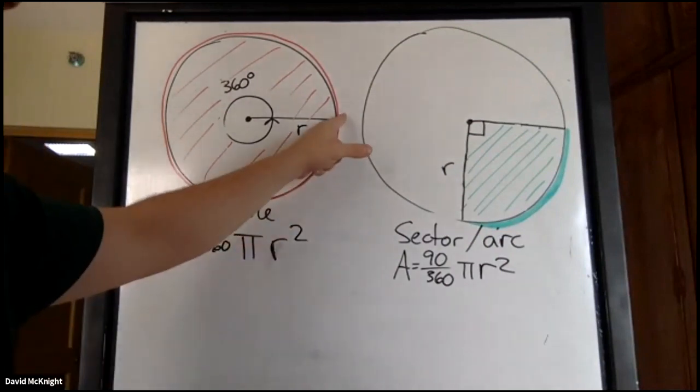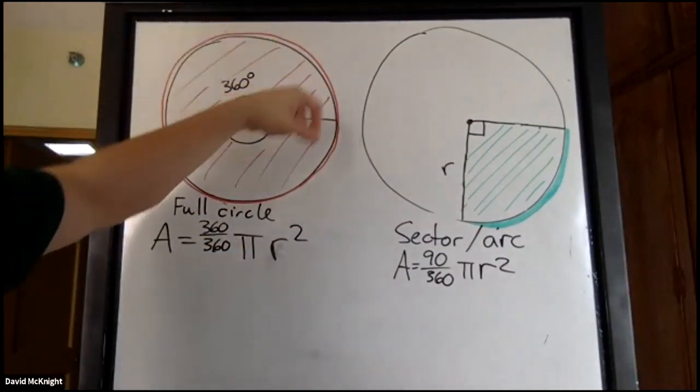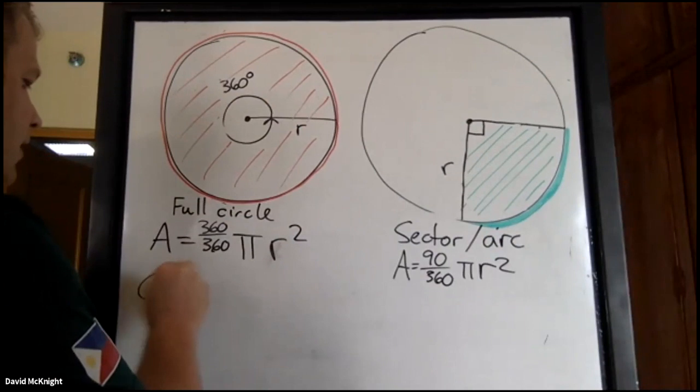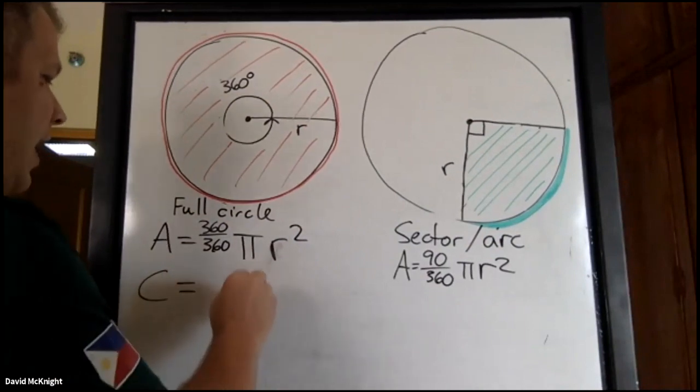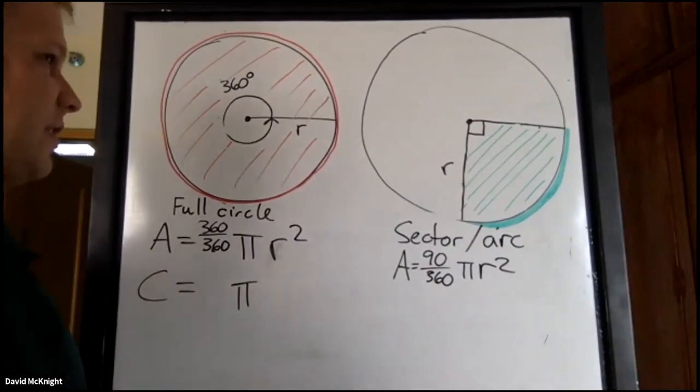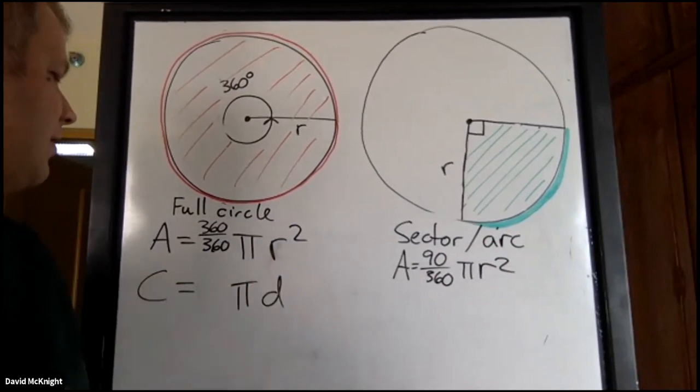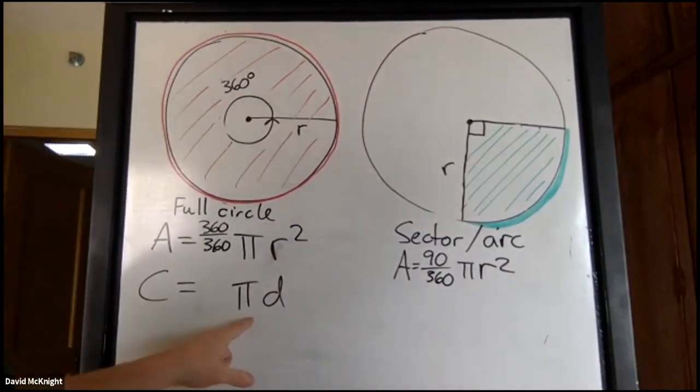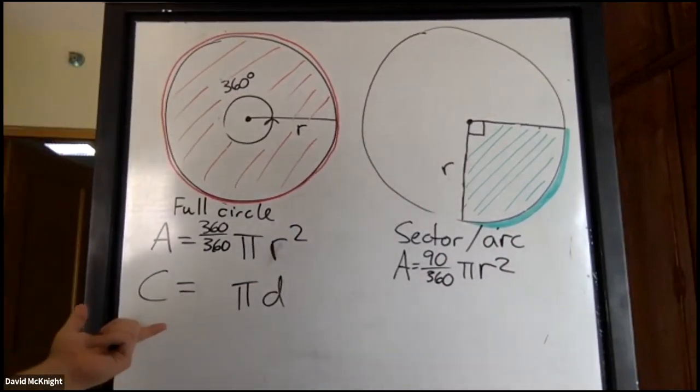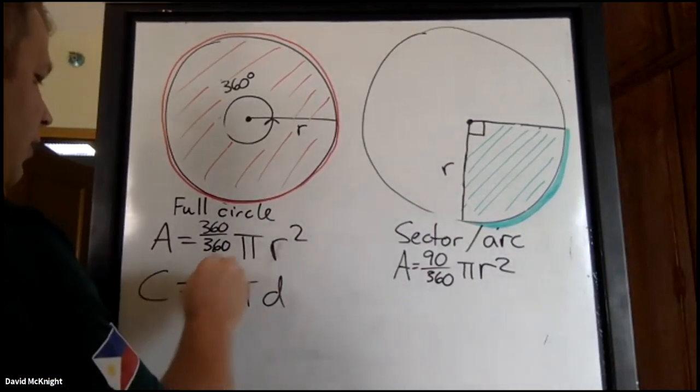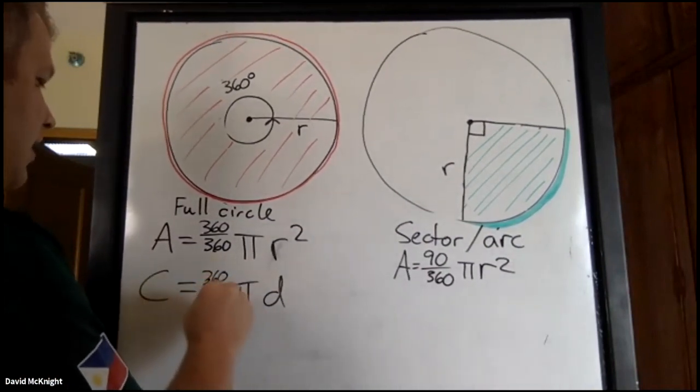And if we look at arcs, well, arcs is circumference. So circumference is equal to π times the diameter. In this case we have a full circle, so 360 over 360, which we wouldn't have to do.